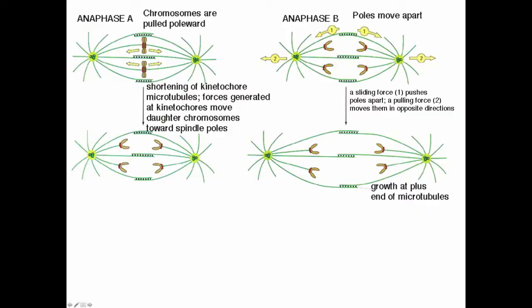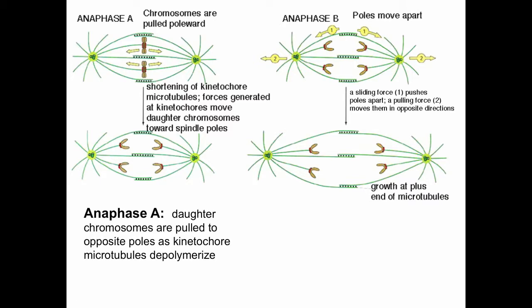At anaphase A, chromosomes are pulled poleward. There's a shortening of kinetochore microtubules. The forces generated at the kinetochores move the daughter chromosomes toward the spindle poles. The daughter chromosomes are pulled towards opposite poles as the kinetochore microtubules depolymerize. This is counterintuitive because these kinetochore microtubules in prometaphase are going in and out, polymerizing and depolymerizing very rapidly trying to find their target, the kinetochore of the chromosome.